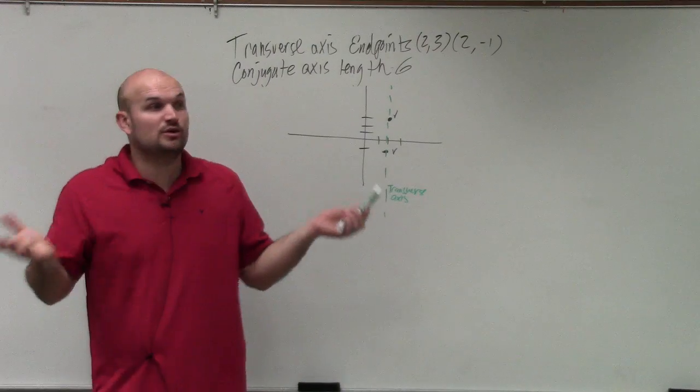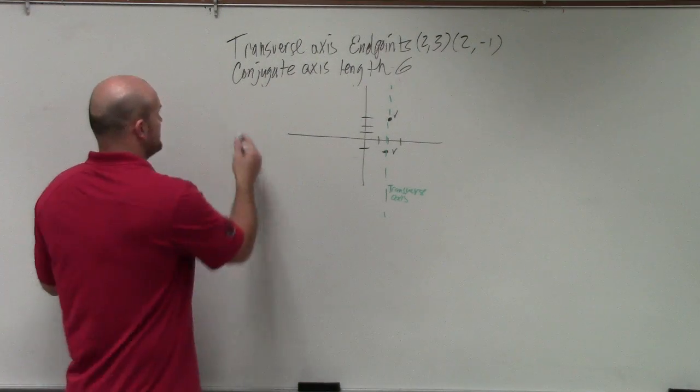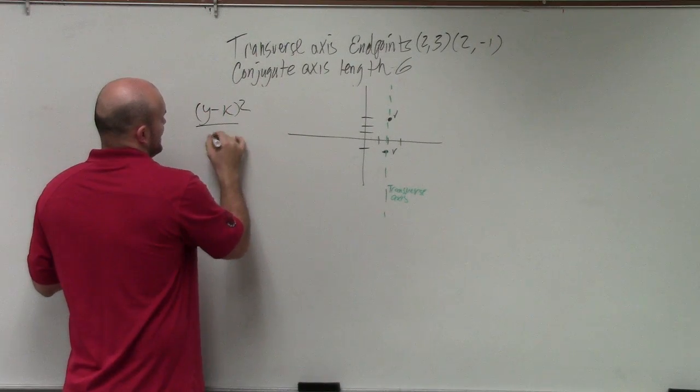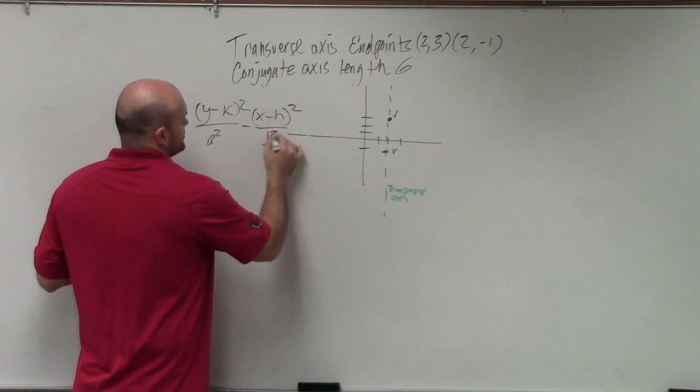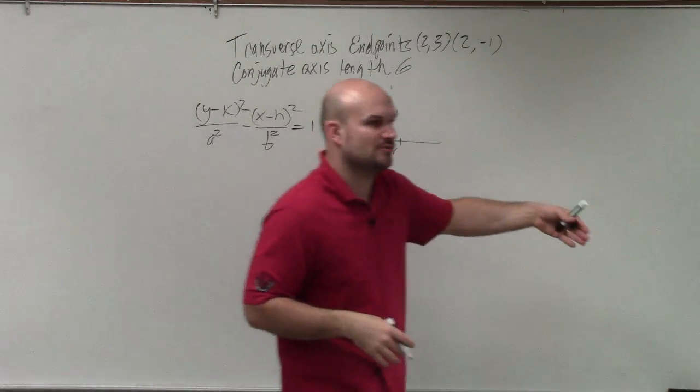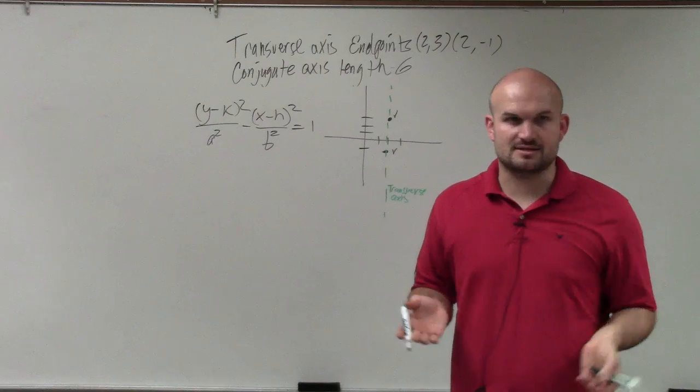So now that I know it's vertical, do I already know what formula I'm going to be using? Yeah, the one that I did in that last equation. So it's going to be y minus k squared over a squared minus x minus h squared over b squared equals 1. It's always a squared minus b squared. But remember, when the y is over the a, it's a vertical transverse axis.